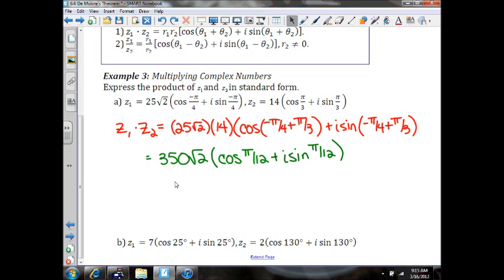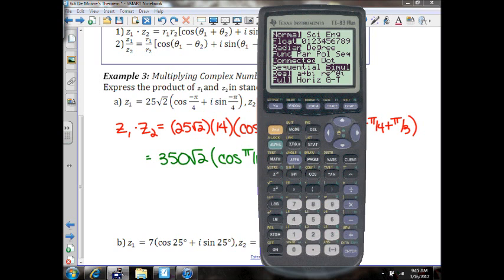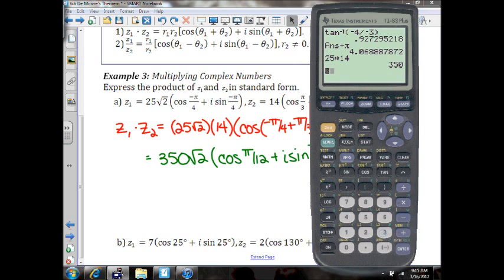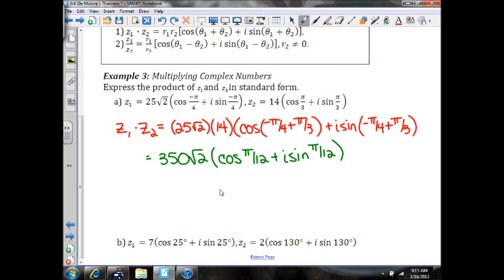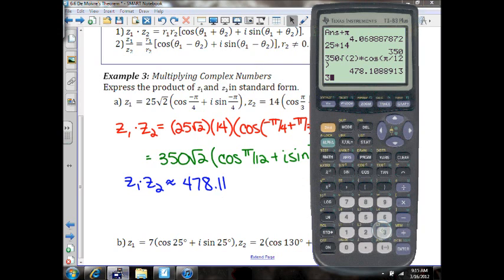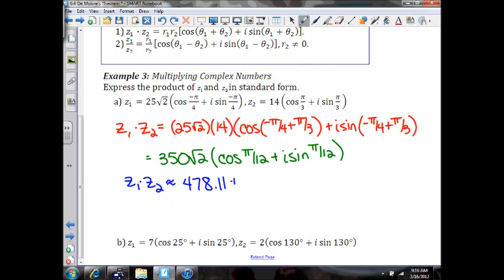Now the nice thing about this is because these are in pi, make sure you're in radian mode. We're just going to multiply these out. 350 times the square root of 2 times cosine of pi divided by 12 would be about 478.11. And we'll do 350 square root of 2 times sine of pi divided by 12 would be about 128.11i. And there's your answer.